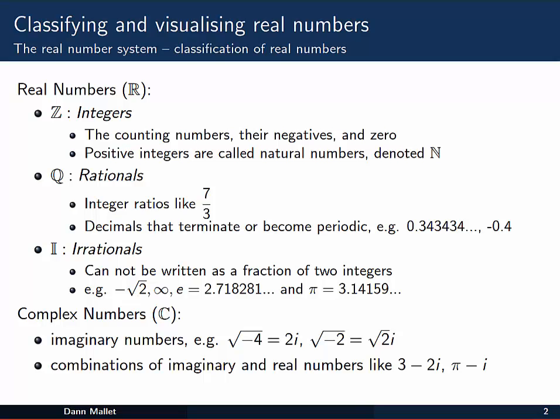The positive integers like 1, 2, 3, 4 and 5, the counting numbers, are also referred to as the natural numbers. The natural numbers we often denote with this symbol N here, and the integers with this symbol Z.